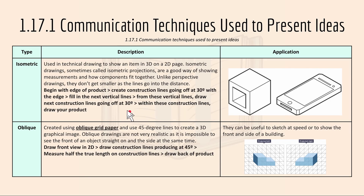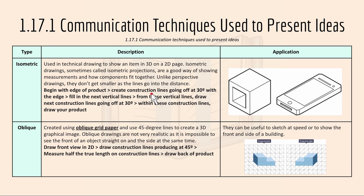Then we have isometric drawing. It's used in technical drawing to show an item in 3D on a 2D page. Here's how you draw an isometric drawing: begin with an edge of a product, then create construction lines going off at 30 degrees — isometric is drawn at 30 degrees. Fill in the next vertical line, and from these vertical lines draw the next construction lines going off at 30 degrees. Within these construction lines, draw your product. Check out other YouTube videos for a more detailed description. One disadvantage of isometric is that, unlike perspective drawings, the lines don't get smaller as they go into the distance.